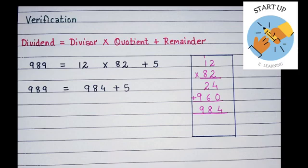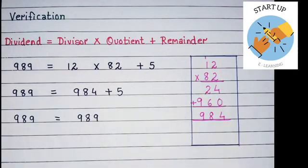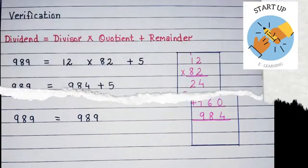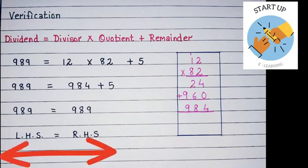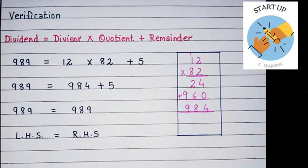Now we are going to add 984 + 5. It will become 989. So we have got the answer as 989 = 989. It means both sides, left-hand side and right-hand side, are equal. So our sum is correct. We have verified our sum through this formula.